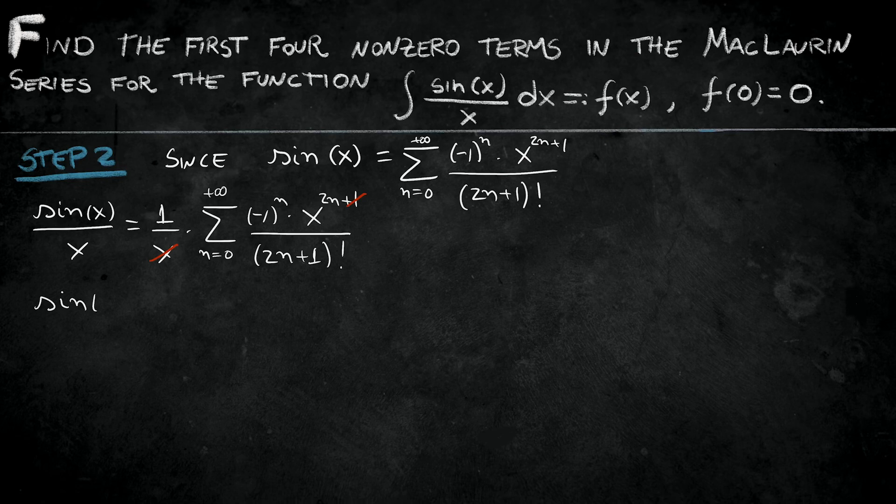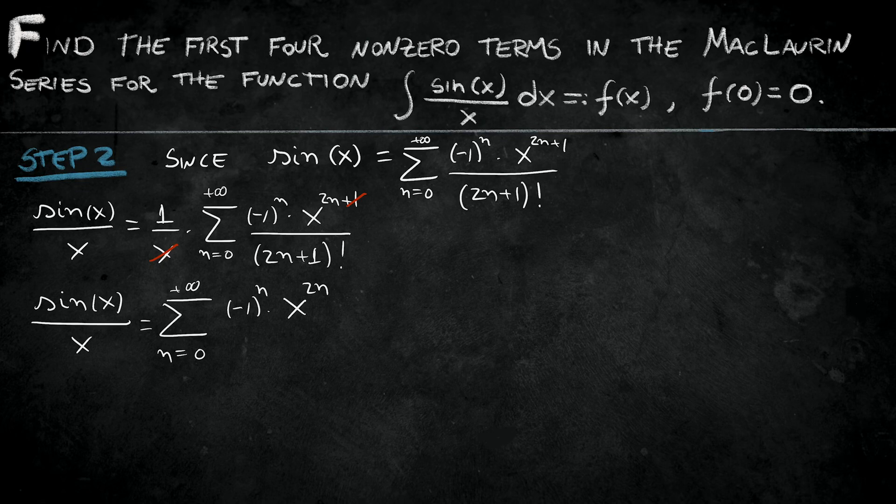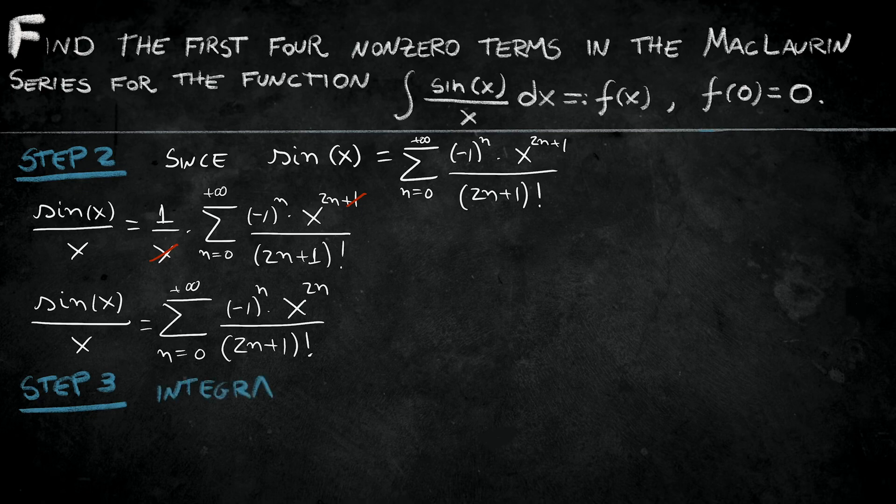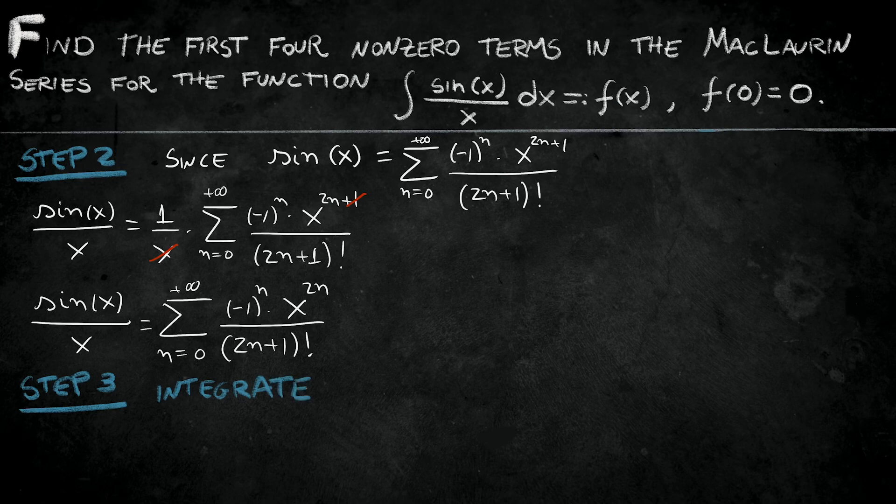we have sine of x over x is actually equal to the series, when n from 0 to positive infinity of minus 1 to the power n, x to the power 2n, over 2n plus 1 factorial. And now that's for all x, but not 0, because I'm dividing by 0. Step 3 is the integration. Let's integrate both sides.